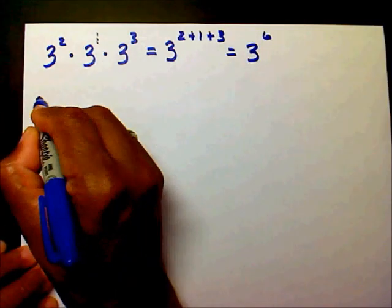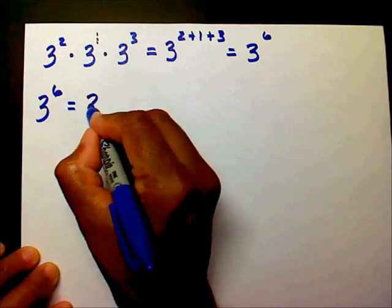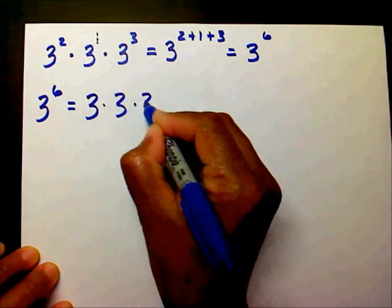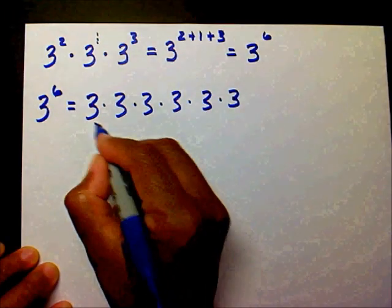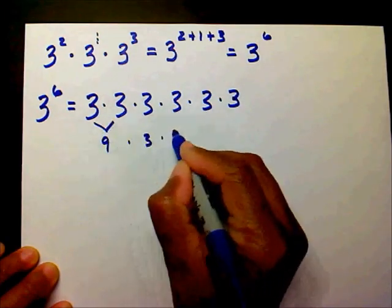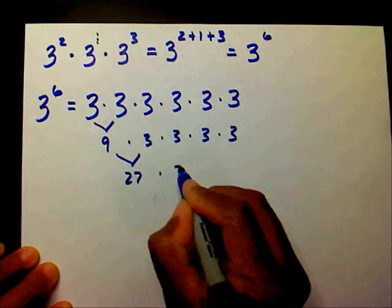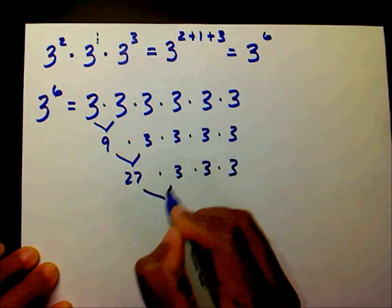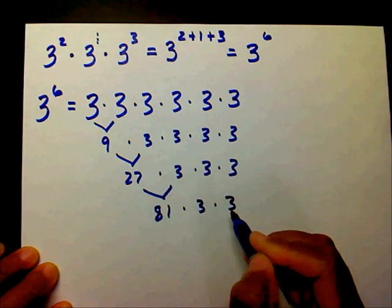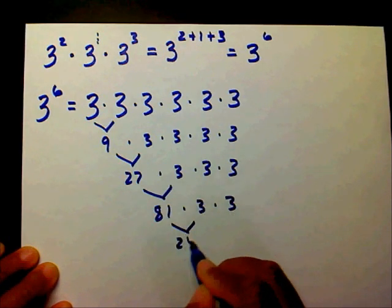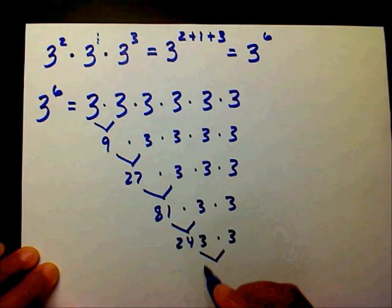So we need to find out what is 3 to the sixth power. It means 3 times 3 times 3 times 3 times 3 times 3. Multiplying: 3 times 3 is 9, 9 times 3 is 27, 27 times 3 is 81, 81 times 3 is 243, and 243 times 3 is 729.